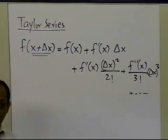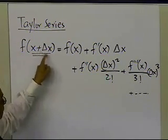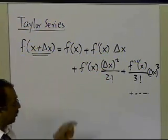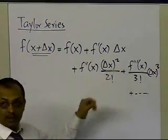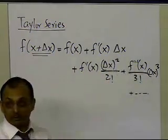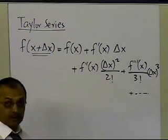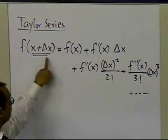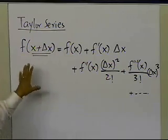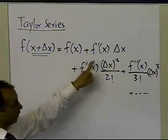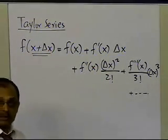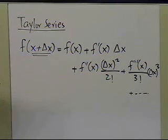Keep in mind that delta x does not have to be small — it's a common myth that Taylor series requires delta x to be a small number. The only reason people choose delta x to be small is that then you can use a finite number of terms and still get a very accurate answer, because delta x squared and delta x cubed terms become very small. The only true restriction is that all the derivatives must be continuous and defined between x and x plus delta x.